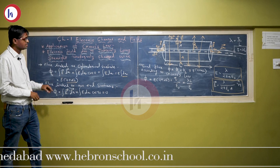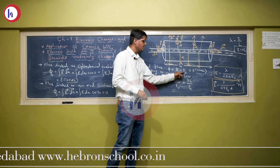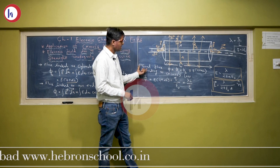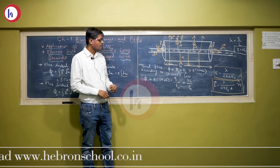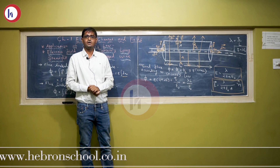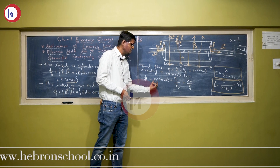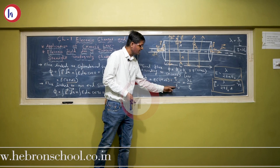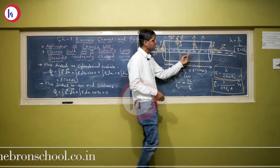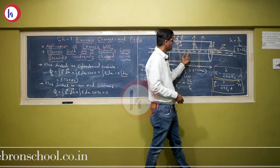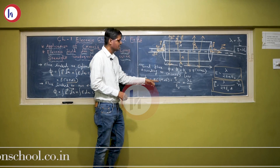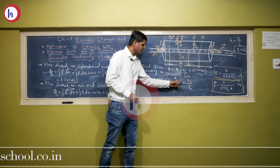The total flux is φ = φ₁ + φ₂ = E × 2πrl + 0 = E × 2πrl. According to Gauss's law, the total flux linked to any closed surface equals Q/ε₀. So E × 2πrl = Q/ε₀, where Q is the charge enclosed by the cylinder. Since lambda equals charge per unit length, the charge enclosed Q equals lambda × l. Substituting, E × 2πrl = λl/ε₀, and l cancels out.